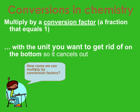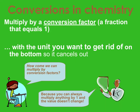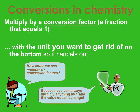We multiply by a conversion factor, which is a fraction that equals 1 — the same way that 2 over 2 equals 1. That's why we set up those T-charts. The unit you want to cancel, you put it on the bottom so it cancels out.